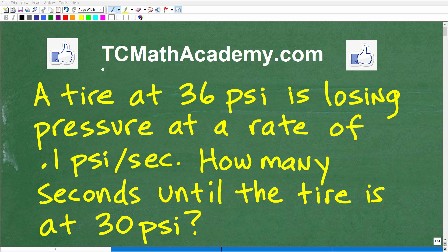Hello, this is John from TC Math Academy, and in this video we're going to solve this math word problem. Let's read the problem now. A tire at 36 psi is losing pressure at a rate of 0.1 psi per second. How many seconds until the tire is at 30 psi?